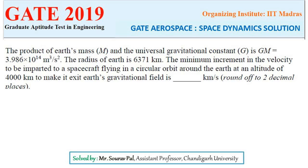The minimum increment in the velocity to be imparted to the spacecraft flying in a circular orbit around the Earth at an altitude of 4,000 km, to make it exit Earth's gravitational field, is to be rounded off to two decimal places in terms of km per second.